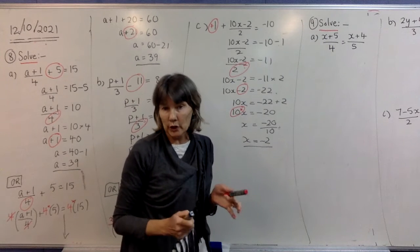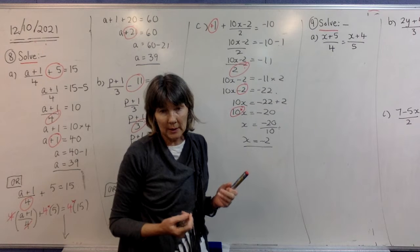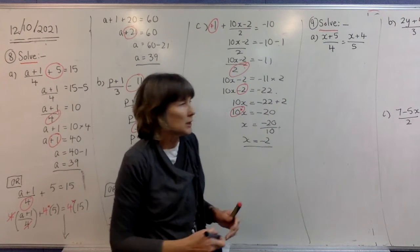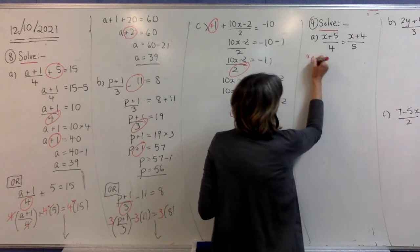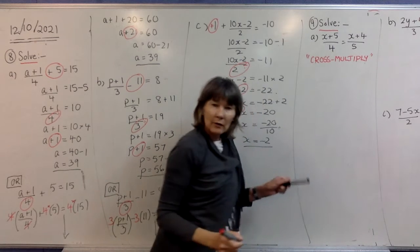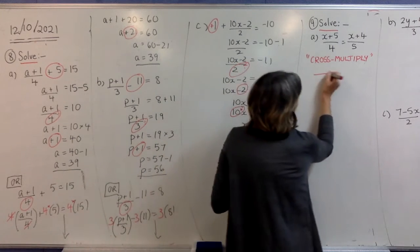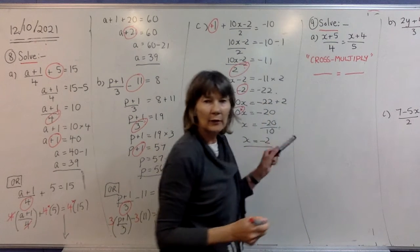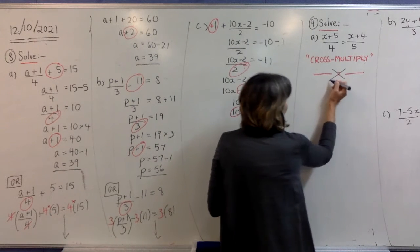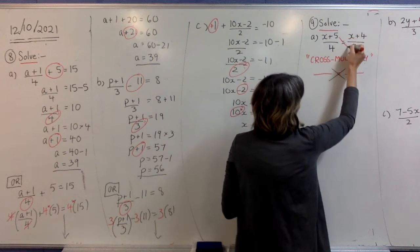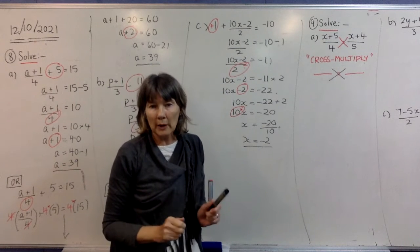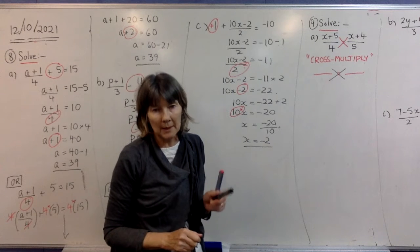Now these next ones, I'm going to show you another method that works for these ones. I do not want you getting this mixed up and doing it all over the place because it only works in a particular situation. The method is called cross-multiplying. Some of you may have heard of this already. You can only do it if you have a fraction equals a fraction. If it doesn't look like that, you can't cross-multiply. The way it works is you would draw a cross through like that. Really important: if you have more than one term on the top or the bottom, you must put it in brackets.